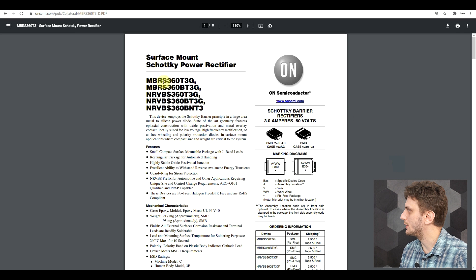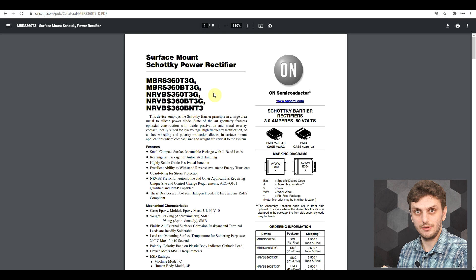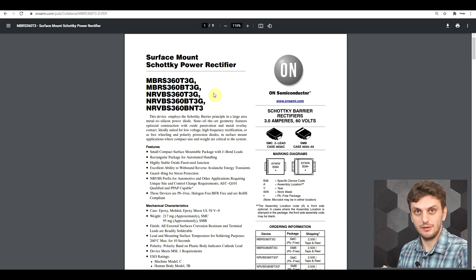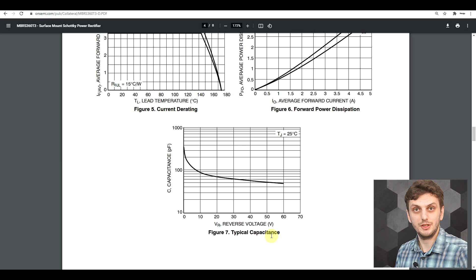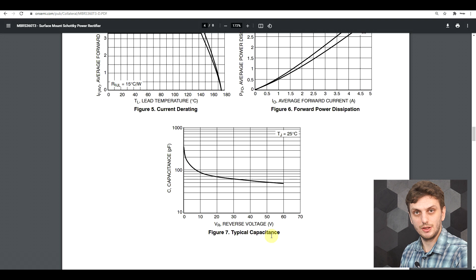Now, if we look at a different kind of diode, so what I have here is the MBRS 360 Schottky power rectifier, so this is definitely not intended to be used as a varicap diode, and we scroll through the graphs, we get to this thing. So what is the typical capacitance when a reverse voltage is applied? So we get our variable capacitance effect even with the Schottky diode.